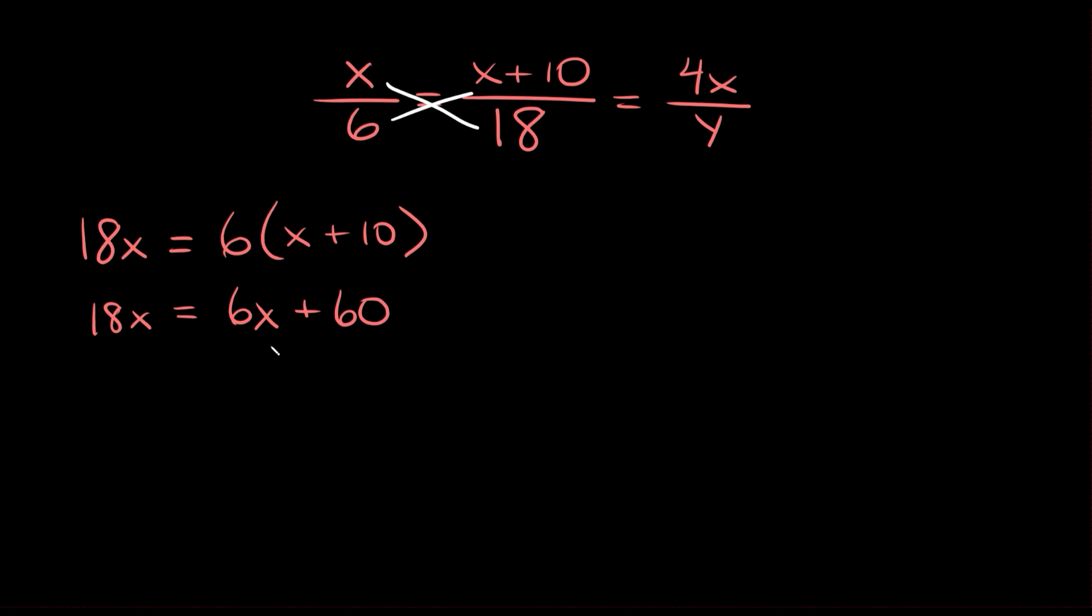We're trying to solve for x here. Let's move all the x's to one side. So let's subtract 6x from both sides. Those cancel out. 18 minus 6 is 12.